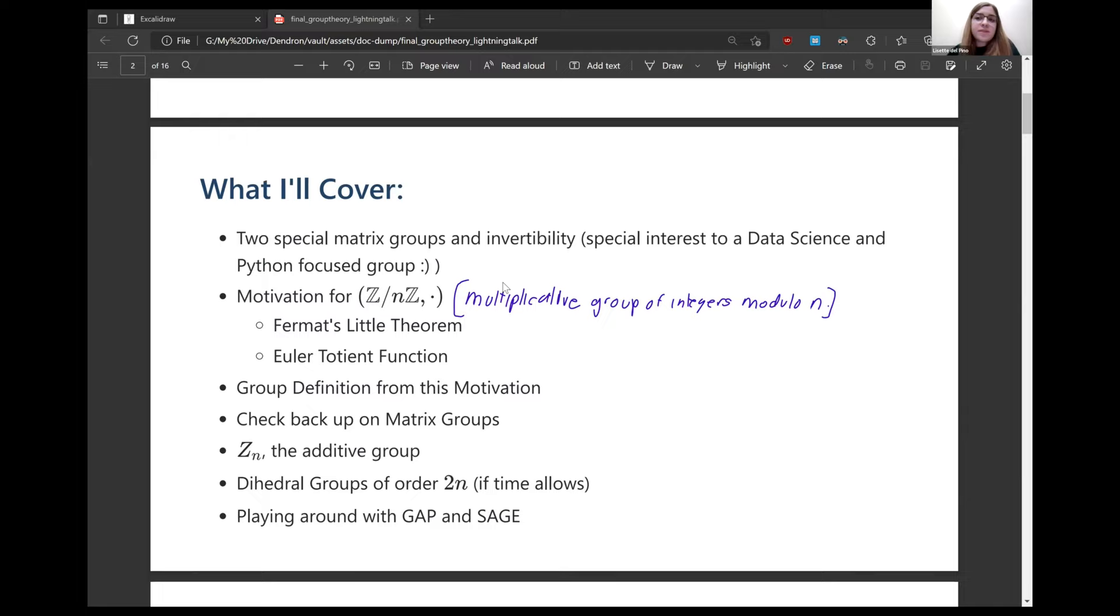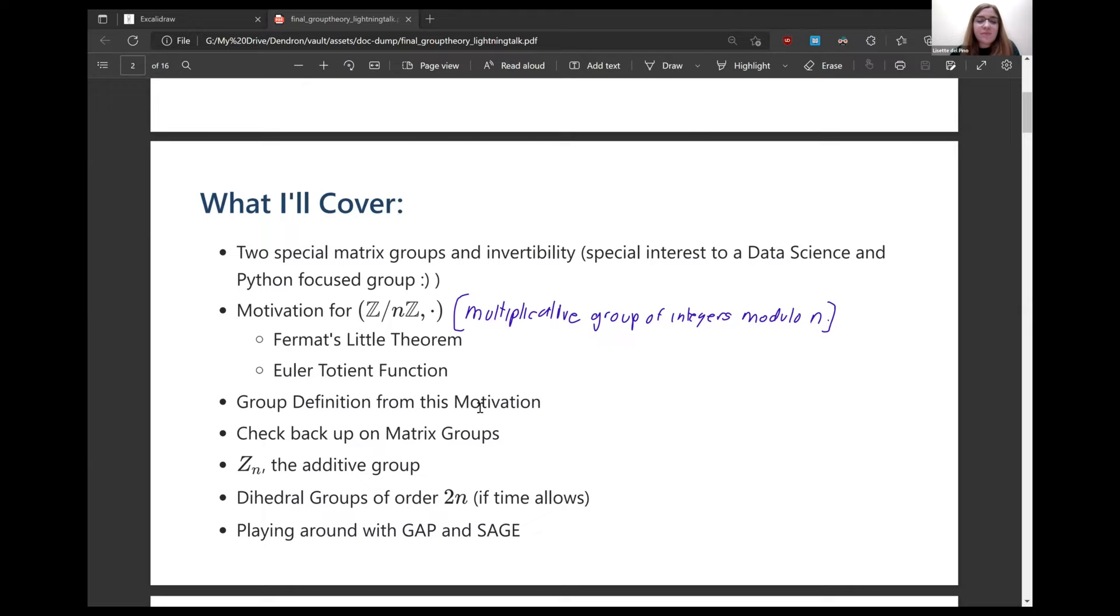So with that caveat out of the way, I will tell you what I'll try to cover. First, I'm going to talk about two interesting matrix groups, and I'll talk about invertibility criteria for matrices. I think this would be of special interest to data science focused people. I know the group isn't data science focused, but if you code in Python, you probably are interested in DS.